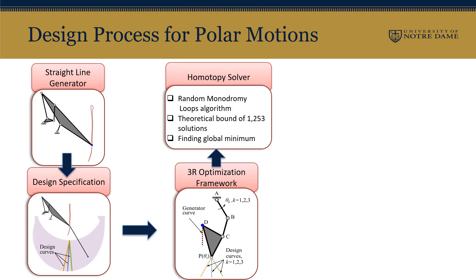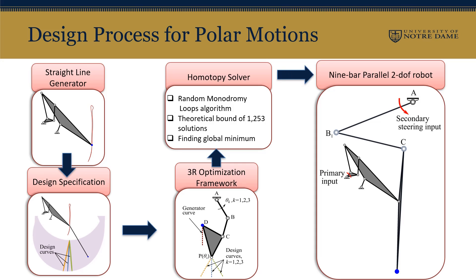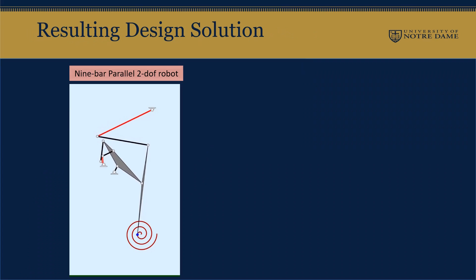Polynomial conditions for optimality are solved using a homotopy technique which found all possible minima including the global minimum, leading to a nine bar mechanism.